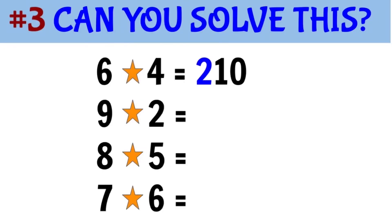Question number three is a math problem involving made-up operations. In this example, 6 star 4: the 2 came from the difference of 6 and 4, and 10 comes from the sum of 6 plus 4.